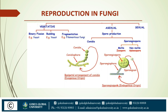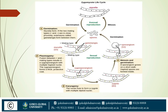Now let us understand sexual reproduction in fungi. Rhizopus is placed in the class zygomycetes. In Rhizopus, sexual reproduction occurs by conjugation. There are two hyphae of opposite strains — one is a positive strain and the other is a negative strain. The positive strain is considered as the male hyphae and the negative strain is considered as the female hyphae.